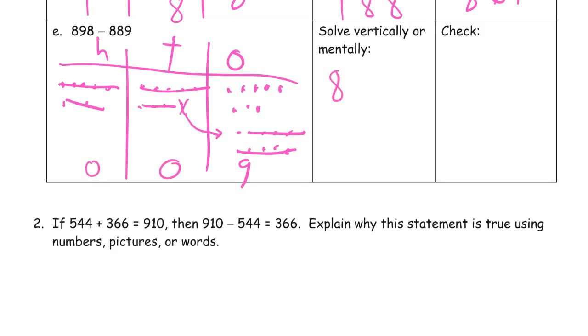898 minus 889. Don't have enough ones, got to decompose a 10. Gives us 18 ones. 18 minus 9 is 9. And our tens place, 8 minus 8 is 0. And our hundreds, 8 minus 8 is 0.